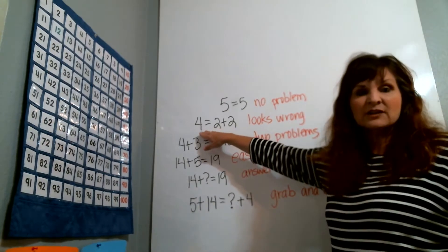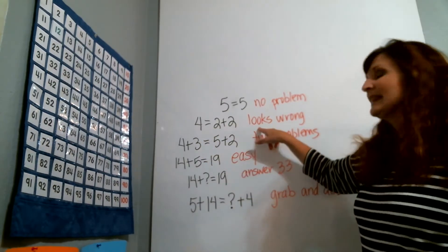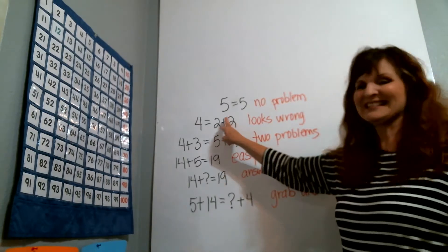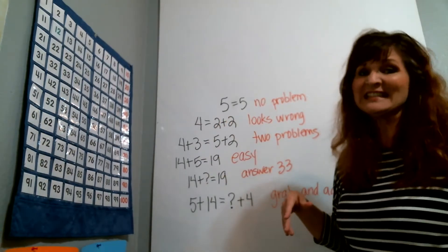If they see something like this, 4 equals 2 plus 2, they say that just looks wrong, because the order is opposite of how they've seen it since they were little.